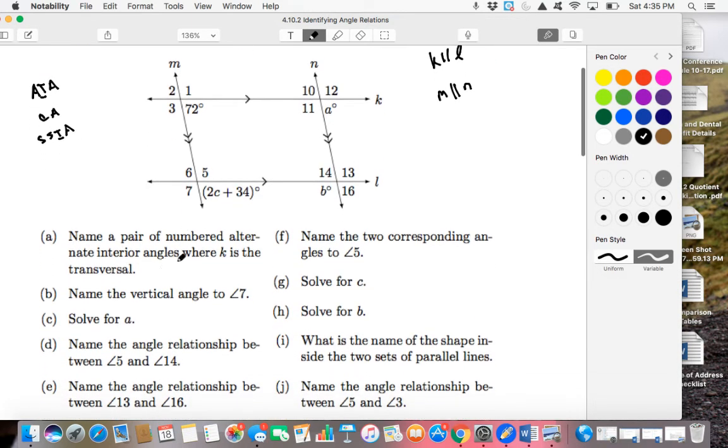Alright, so question (a): name a pair of numbered alternate interior angles where K is the transversal. K is the transversal, so I'm looking at K, and here's my transversal coming off like this, which means that my parallel lines in this case would be M and N. So these are the relationships that we're thinking about here. We need to name a pair of numbered alternate interior angles. Well, one alternate interior angle would be angle 1, and the alternate—the transversal, interior to the two parallel lines—would be angle 11.